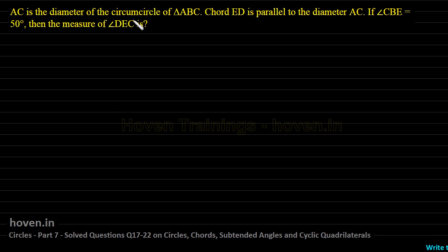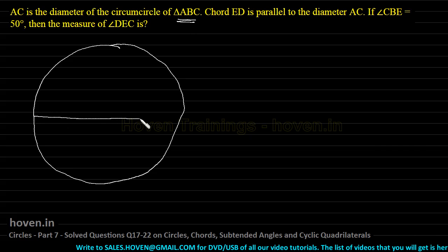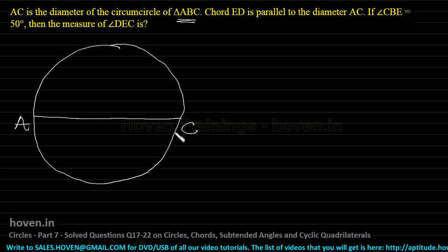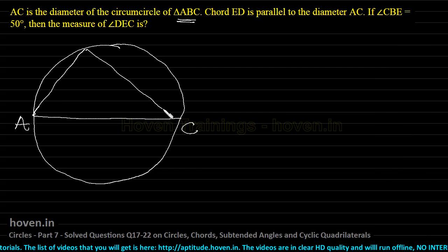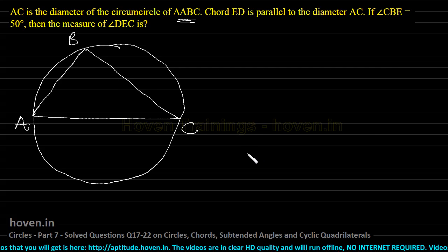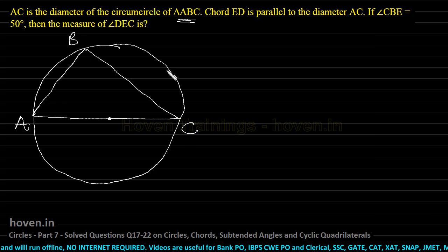AC is the diameter of the circumcircle of triangle ABC. Let us first draw a schematic diagram. Let this be a circle. In this, let us suppose this is the diameter AC. AC is the diameter of the circle and one of the sides of triangle ABC. This is the center of the circle.